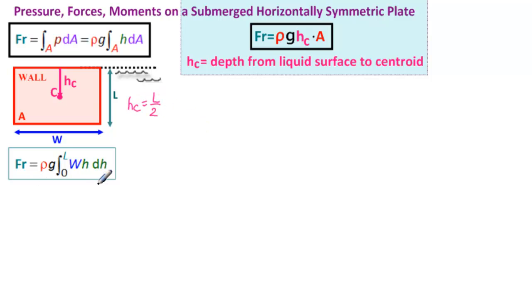Let's integrate and check our formula. So we would have rho times g. W is a constant, so we can take it out front. We're left with h dh, so what's the integral of h? It's h squared over 2 from 0 to L.